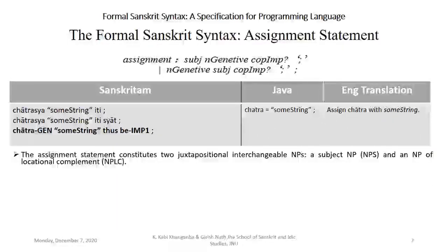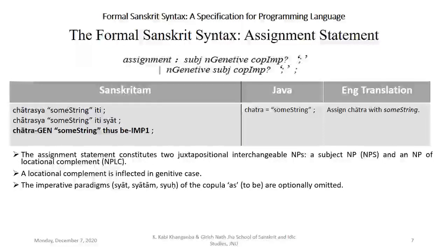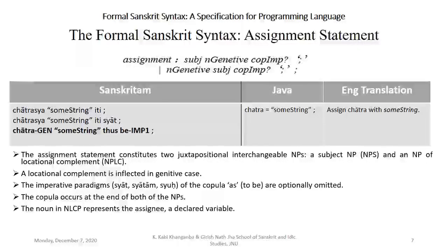Assignment statement. The assignment statement constitutes two juxtapositional interchangeable NPs: a subject NP and an NP of locational complement. A locational complement is implicated in genitive case — for example, 'chatra-sya.' The 'chatra-sya' is the locational complement in genitive case, where 'chatra' is the variable and 'sya' represents the genitive case ending. The imperative paradigms of the copula 'as,' meaning 'to be,' are often omitted. As in the declarative sentence, copulas are omitted. The noun in the locational complement represents the assignee, a declarative variable.